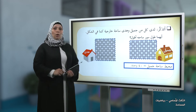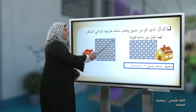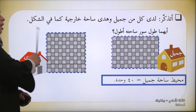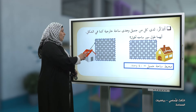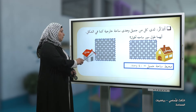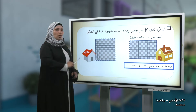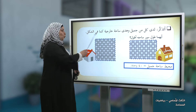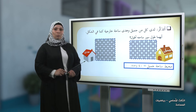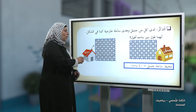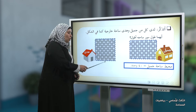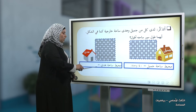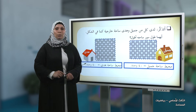لنذهب لساحة هدى ونبدأ بالعد: واحد، اثنان، ثلاثة، أربعة، خمسة، ستة، سبعة، ثمانية، تسعة، عشرة. واحد، اثنان، ثلاثة، أربعة، خمسة، ستة، سبعة، ثمانية، تسعة، عشرة. هذا الشكل مربع. هيا بنا نجد محيطه: عشر وعشر عشرون، وعشر ثلاثون، وعشر أربعون. إذن محيط ساحة هدى يساوي أربعون وحدة.